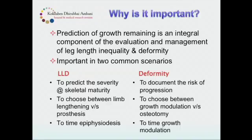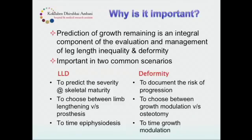Similarly, when dealing with a child who has a complex deformity, we look at the risk of progression to choose whether growth modulation would work — that's the in thing for the last 10 years — or whether we have to resort to an osteotomy. If doing a growth modulation, when to time it is absolutely important. Clinical scenarios are like this: you have a child with a post-natal bowing of the tibia.